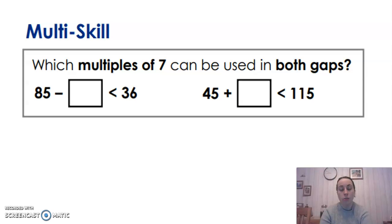So you need to find the multiples of 7 that you could use in both at the same time. So it has to be the same for both. And it says multiples of 7, so we know there's more than one answer. So good luck with this year 6. Pause it.